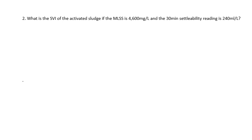What is the SVI of the activated sludge if the MLSS is 4600 milligrams per liter and the 30-minute settleability reading is 240 milliliters per liter? As always, pull out your knowns and unknowns: 4600 mg/L and 240 mL/L, and we're looking for the SVI.